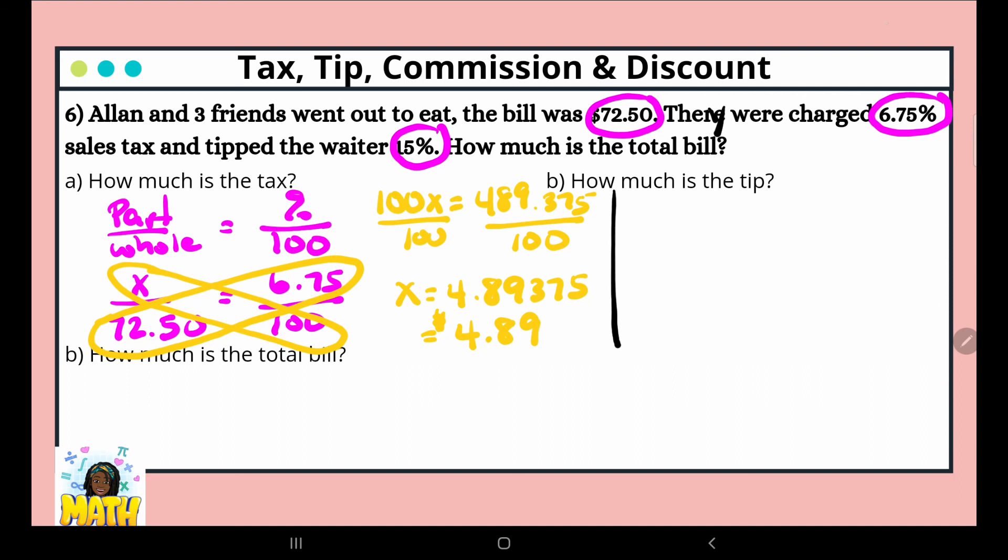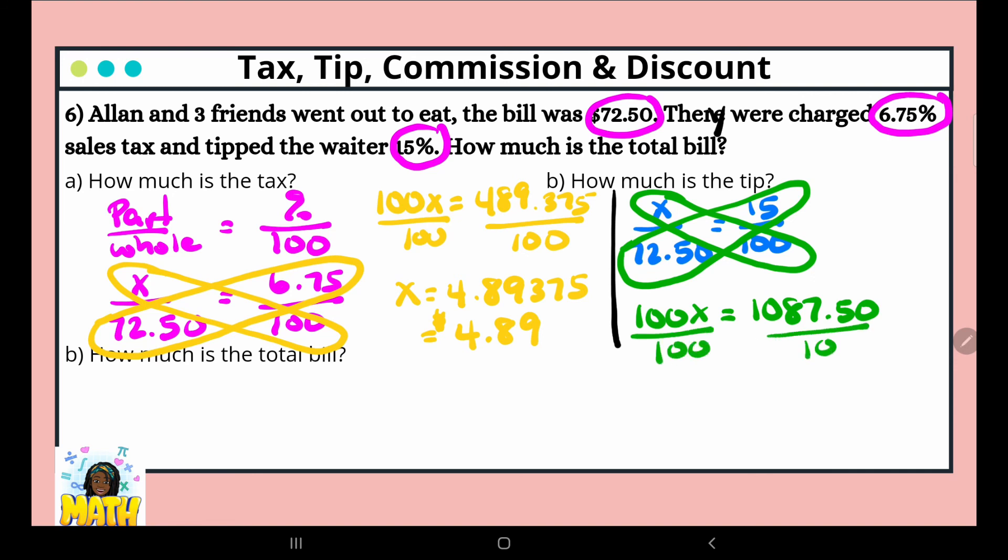Now let's draw a line here so we can separate our work. Now we're going to calculate our tip. So we know we're using the same proportion: part over whole equals percent over 100. So x is our part, our whole is $72.50, and our percentage here is 15 over 100. We cross multiply. So 100x, which equals 1087.50, and then we're going to divide both sides by 100. So here we have that it's 10.8750. Because it's money, we're going to round to the hundredths. So this is $10.88.